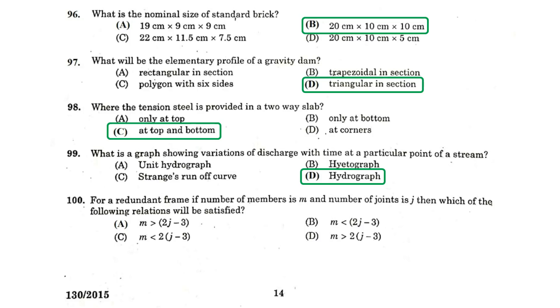For a redundant frame, if number of members is m and number of joints is j, then which of the following relation will be satisfied? m greater than 2j minus 3.